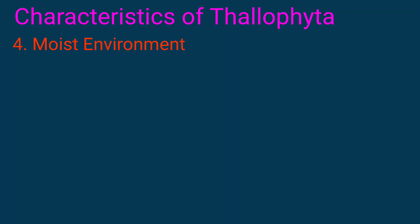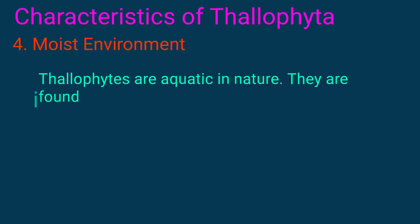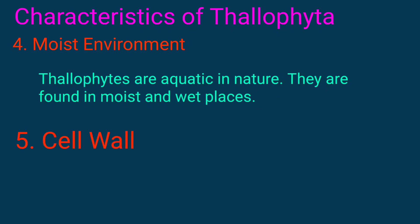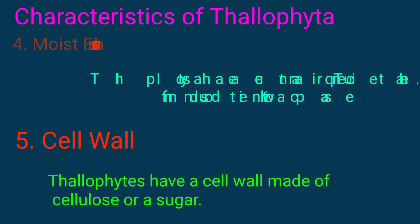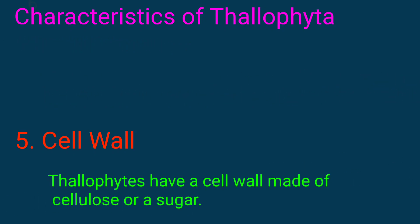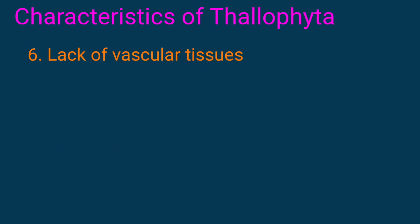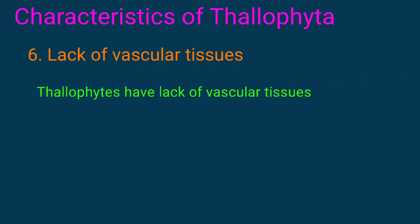Moist Environment — Thallophytes are aquatic in nature; they are found in moist or wet places. Cell wall — Thallophytes have a cell wall made of cellulose or sugar. Lack of Vascular Tissues — Thallophytes lack vascular tissues, which means they cannot transport water and minerals.